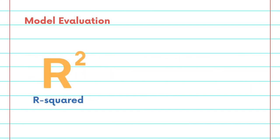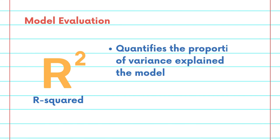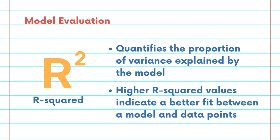The second one is R-squared. R-squared quantifies the proportional variance that could be explained by the model. So in practice, a higher R-squared value indicates a better fit between the model and the data points.